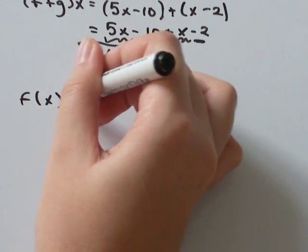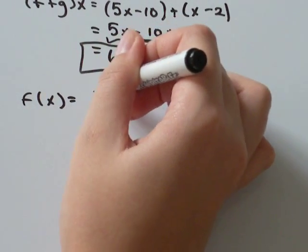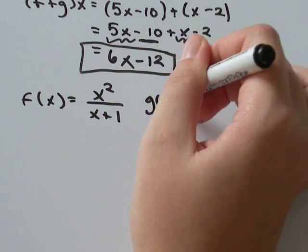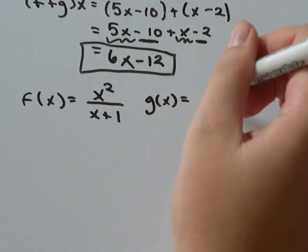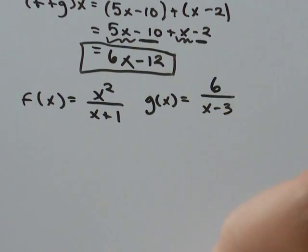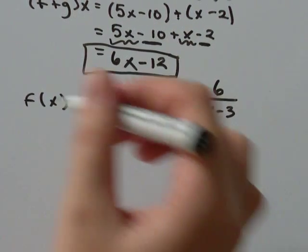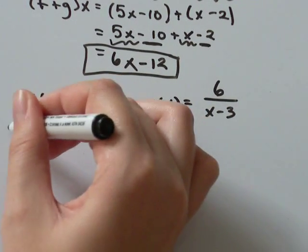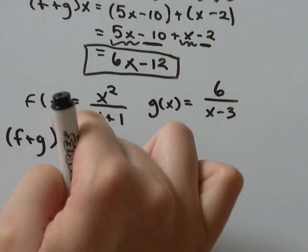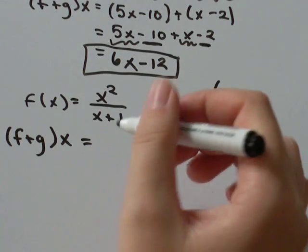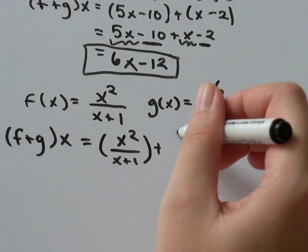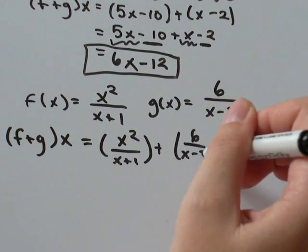f of x equals x squared over x plus 1, and g of x equals 6 over x minus 3. Something like that. I want to find f plus g of x. And so all that is is f of x plus g of x. So x squared over x plus 1 plus 6 over x minus 3.